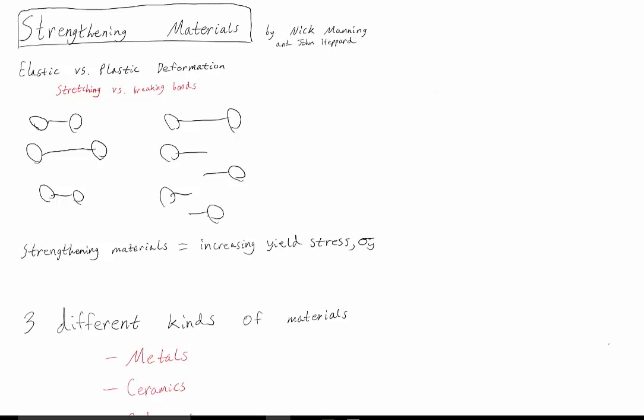So then we come to strengthening materials. To strengthen material, the idea is you've got to increase the yield stress. The yield stress is the point that plastic deformation first occurs. Before that, there's just elastic deformation and the material can return to its original spot.